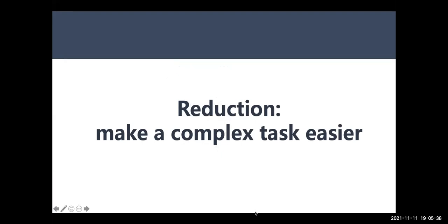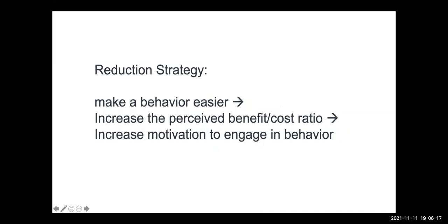Let's start with the first one: reduction — making things easier. What could be better than making things easier? I want you to think about the ethical concerns for every single one of these, because every single one has ethical problems if done incorrectly. When you make things too easy — I'd ask for a show of hands of how many times people here bought something they didn't mean to buy on Amazon because it was just too easy to click.